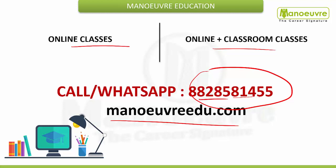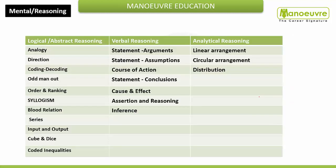Now coming to the important topics from the reasoning section. Logical and abstract reasoning contains: analogy, direction, coding-decoding, odd man out, order and ranking, syllogism, blood relation, series, input and output, cube and dice, and coded inequality.